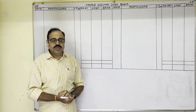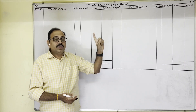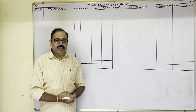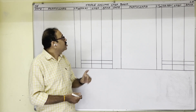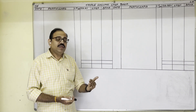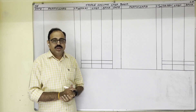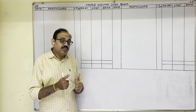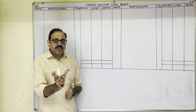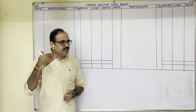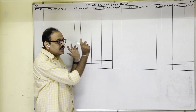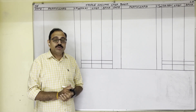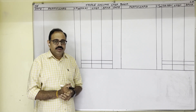The remaining sentences in the question are transactions. To record transactions in the triple column cash book there are two methods. The first is the journal entries method — for every transaction, think of the journal entry and post it in the cash book. The second method is the hints method. In this video I am going to explain the hints method.